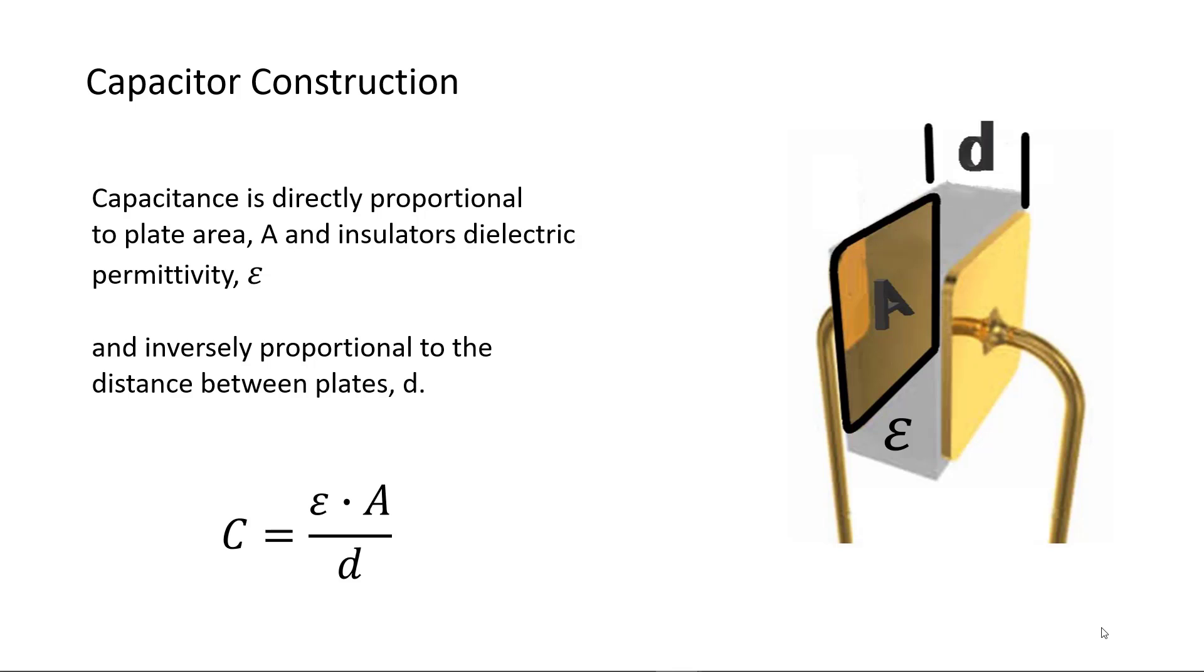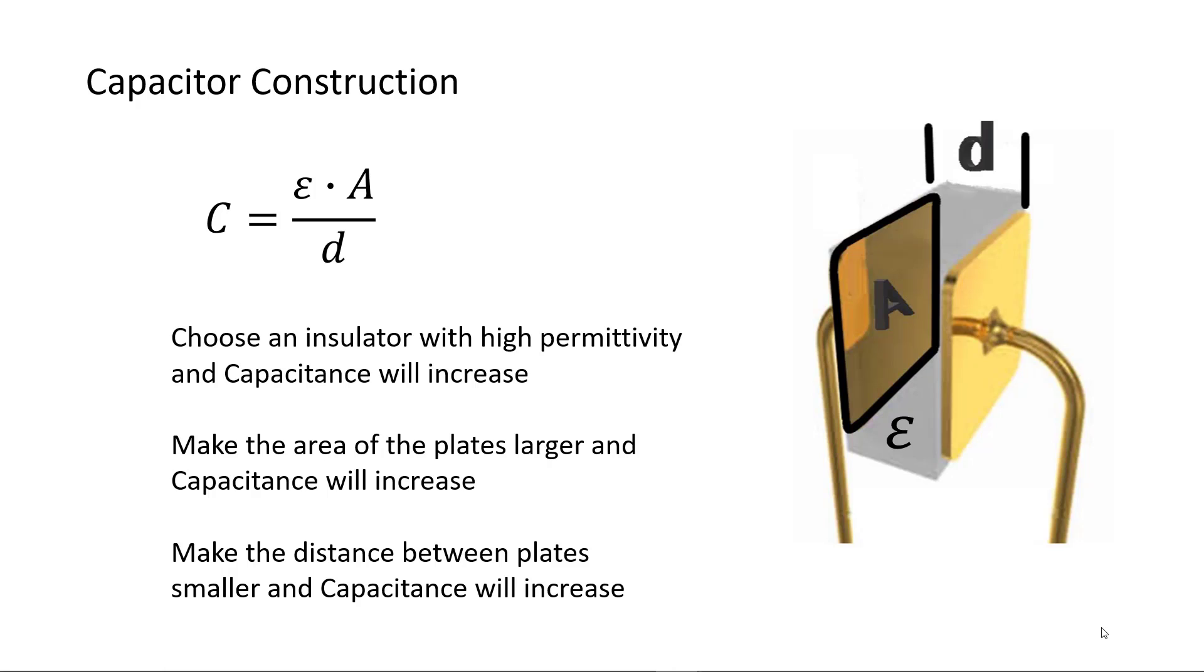Mathematically, C equals epsilon times A divided by D. Choose an insulator with high permittivity and capacitance will increase. Make the area of the plates larger and capacitance will increase. Make the distance between the plates smaller and capacitance will increase.